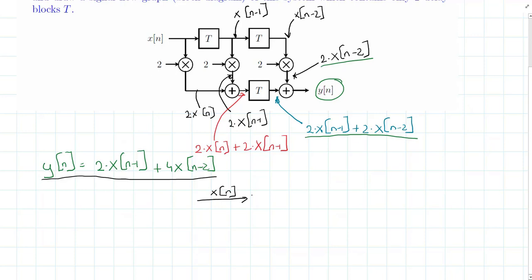Which is always delayed, so we always delay them, which leads to x[n-1]. However, we also multiply it with 2. So we have a multiplier with a factor of 2.